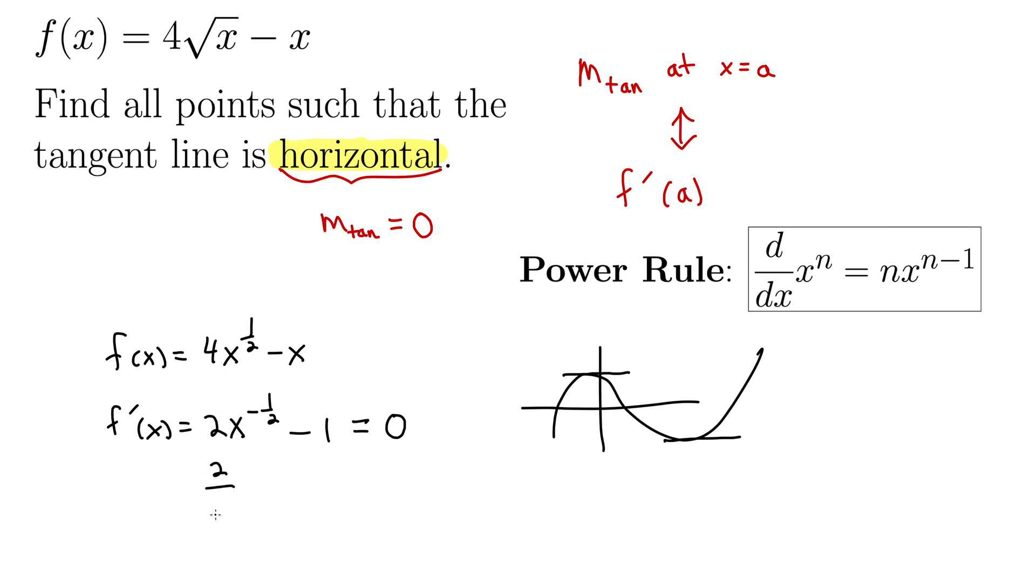I'm going to write this as 2 over x to the 1 half equals 1. So multiply up, right? We're just doing some algebra here. 2 equals x to the 1 half. Square both sides. That gives us x equals 4.